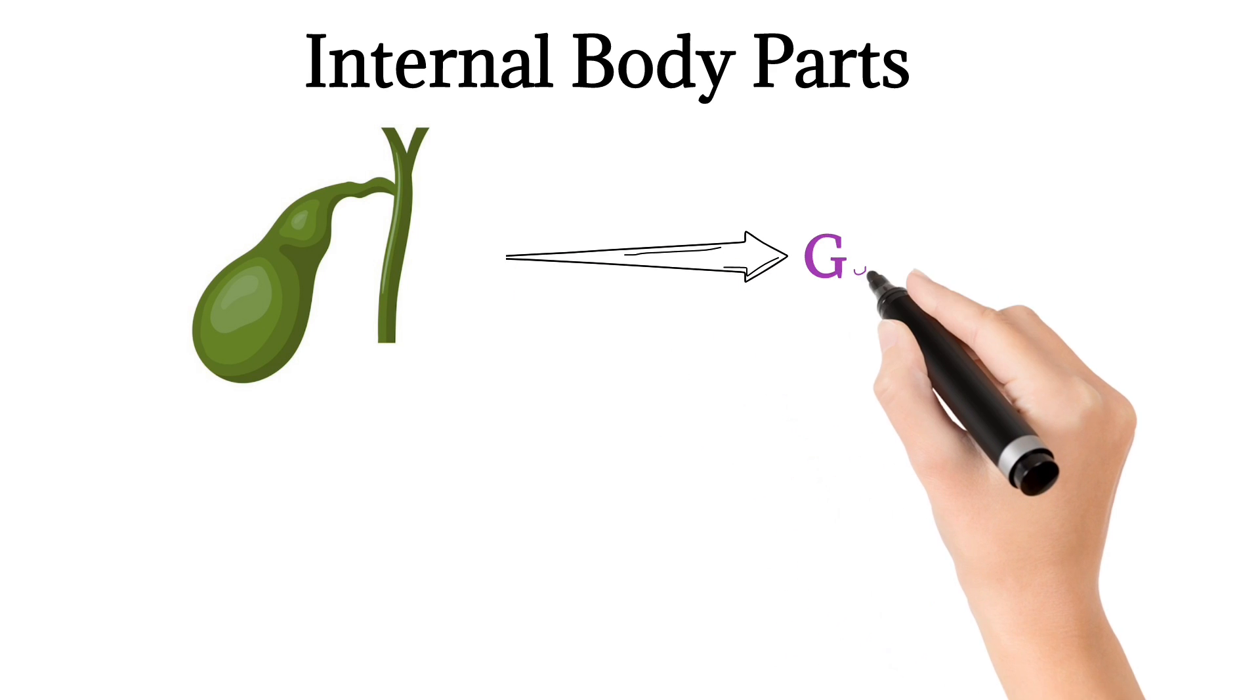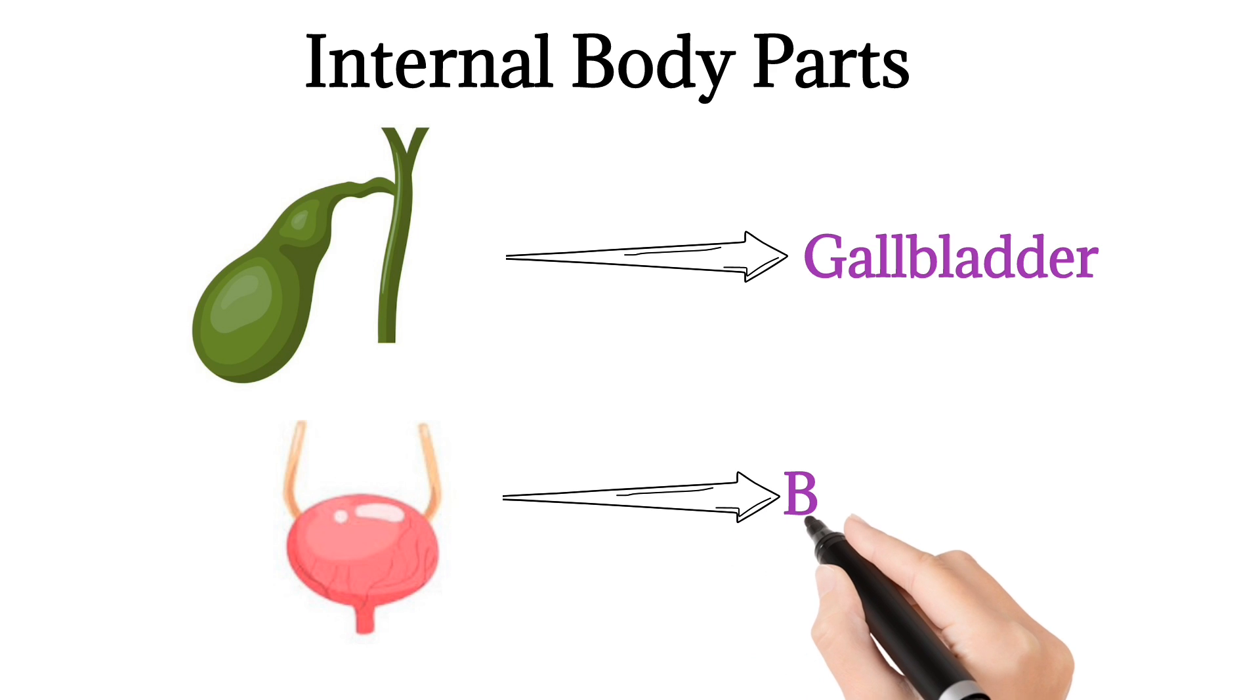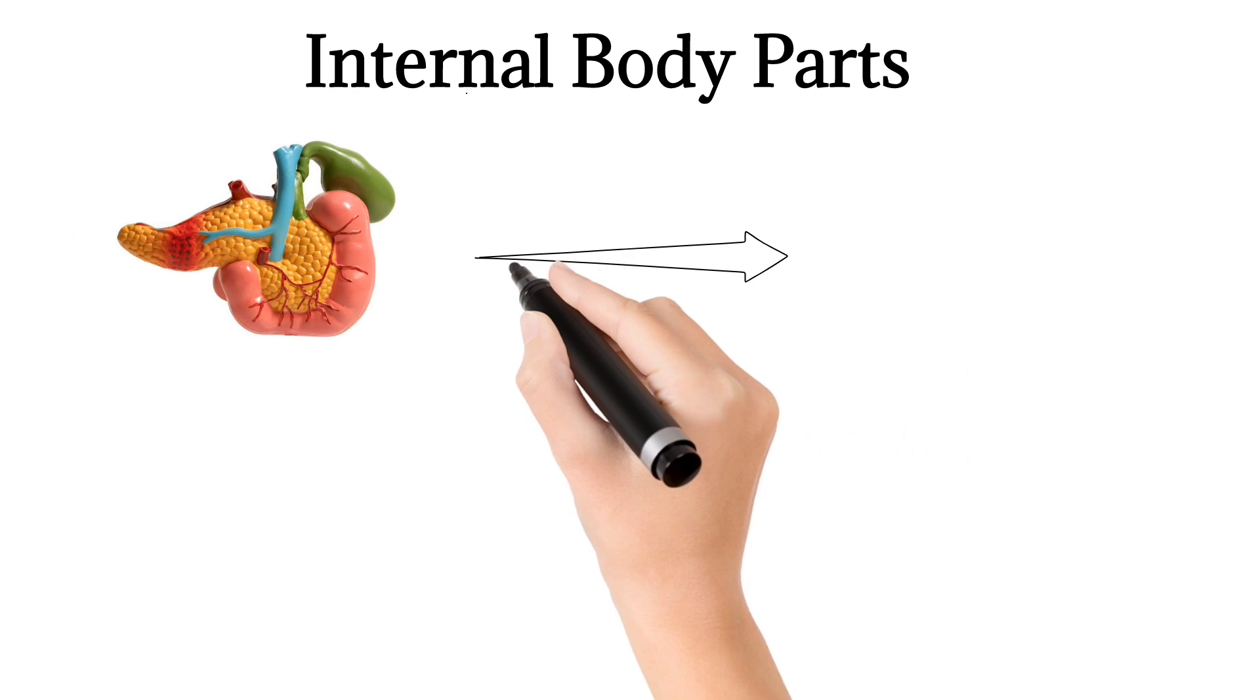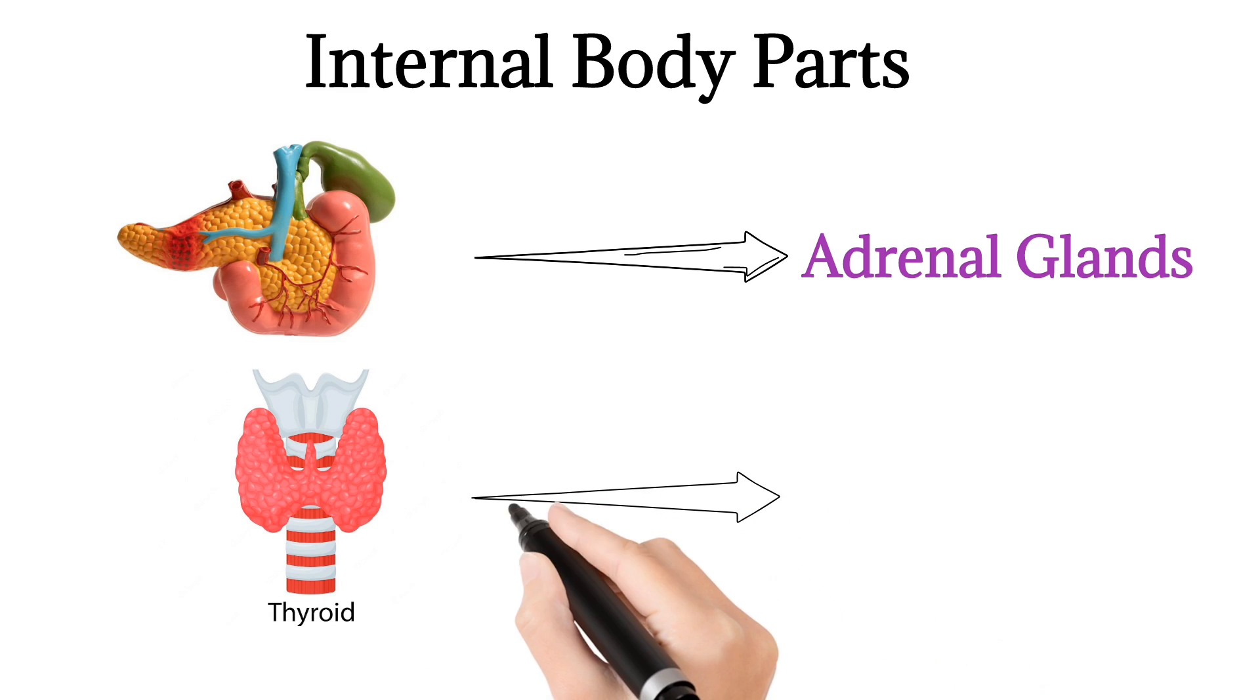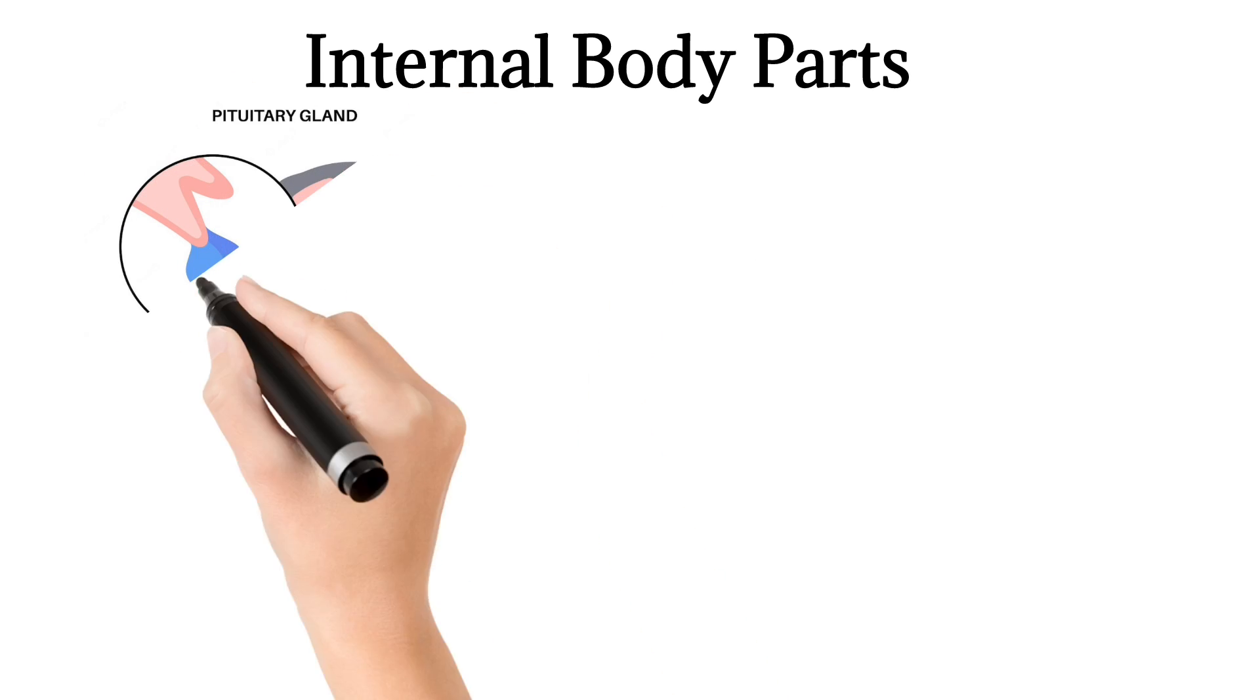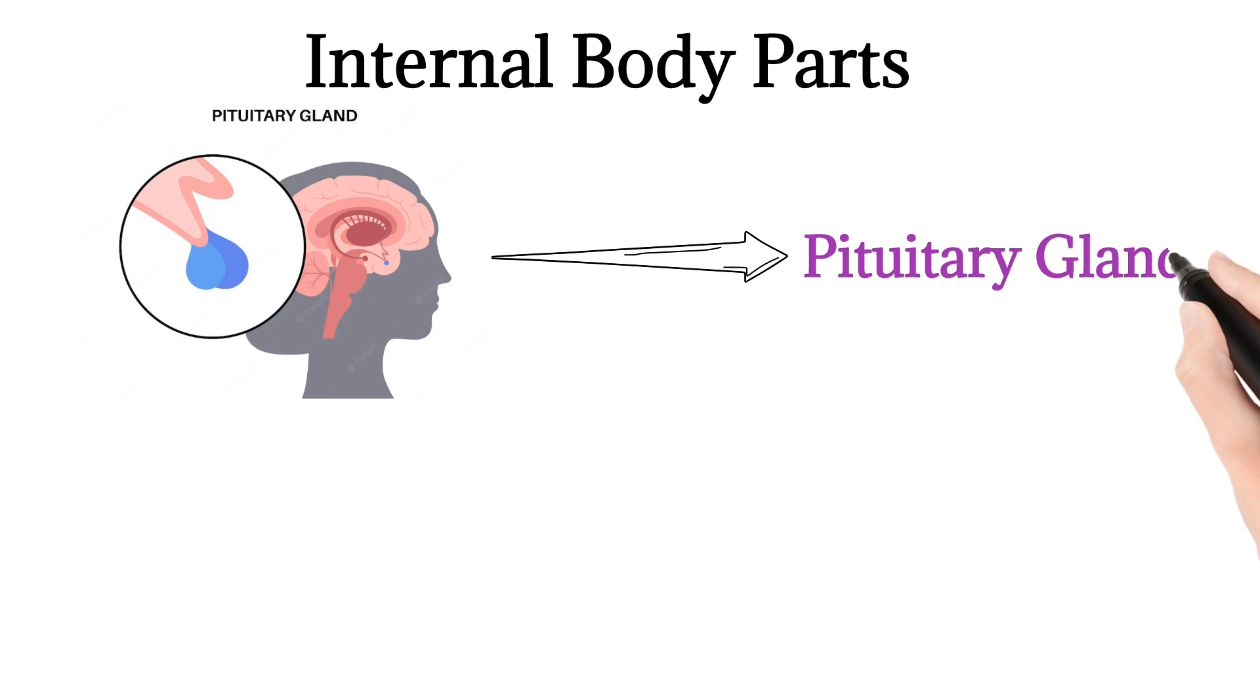This is called gallbladder. Gallbladder. This is called bladder. Bladder. This is called adrenal gland. Adrenal glands. This is called thyroid glands. Thyroid glands. This is called pituitary glands. Pituitary glands.